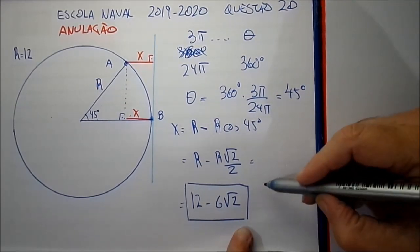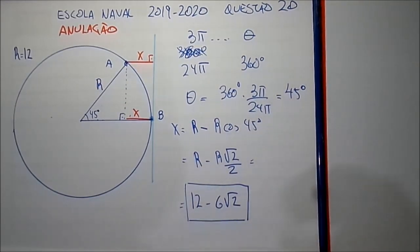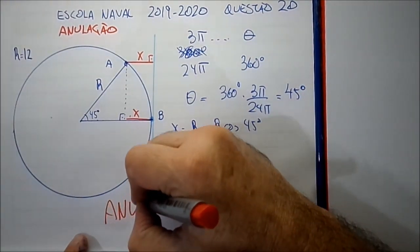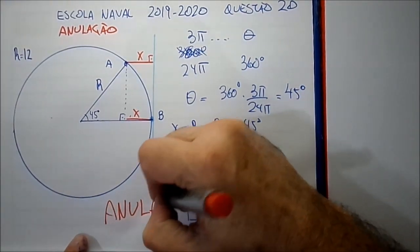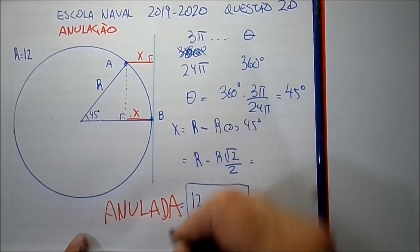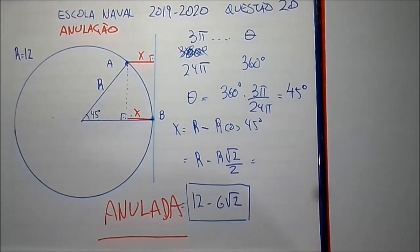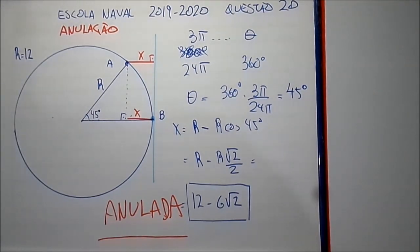Então ela deve ser anulada por não ter essa resposta entre as opções. Corre lá, faz o seu recurso — o recurso vai até o dia 6, é amanhã. Manda a brasa lá e boa sorte.